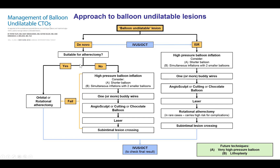For de novo lesions there are essentially two options. One is to perform upfront atherectomy, especially in cases of severe and extensive calcification. The other option is to first try balloons, scoring wires, modified balloons, or laser before going to atherectomy. This is still a matter of judgment. Many people would support going straight to atherectomy if the calcification appears extremely severe, especially if it is superficial — and this is where intravascular ultrasound or OCT can help. Alternatively, first try a balloon and if that fails then switch to atherectomy, with the caveat that if a dissection occurs it may make atherectomy higher risk.